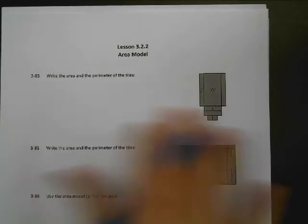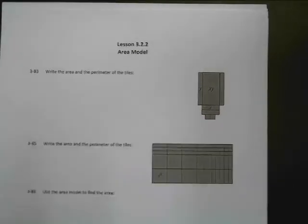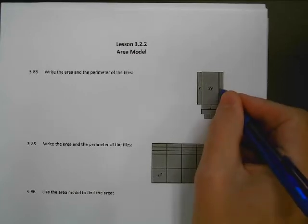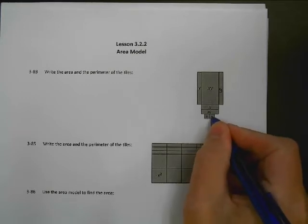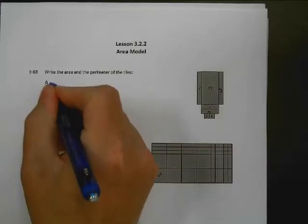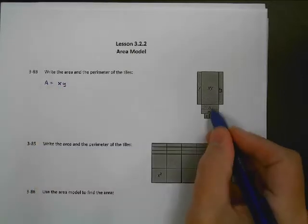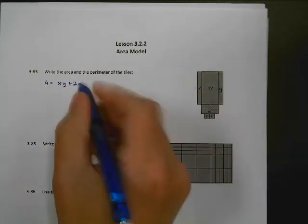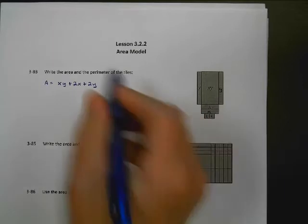So this is similar to what we were doing on the last lesson. We want to find the area and the perimeter of these tiles here. This has an area of Y, this has an area of XY, so this must be Y over here, this must be X over here, and these are 1s. So looking at my total area, I've got 1 of the XYs, so XY, 2 of the Xs so plus 2X, 2 of the Ys so plus 2Y, and then my final part is plus 2.